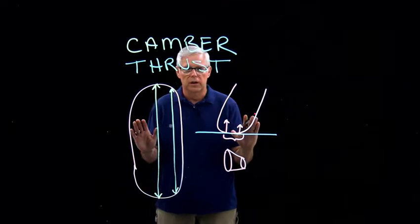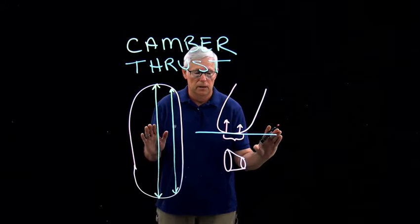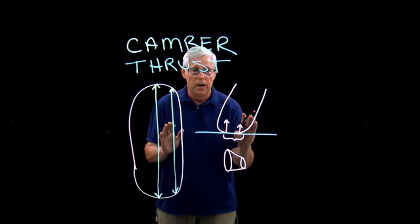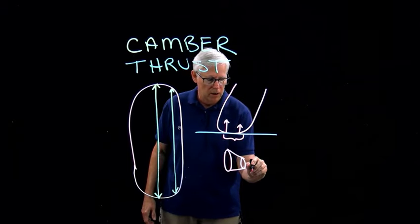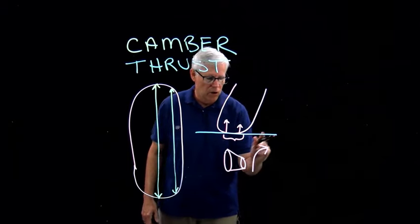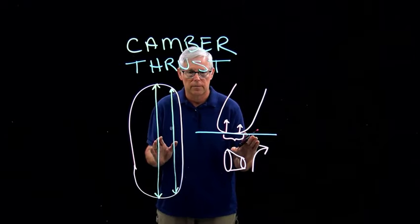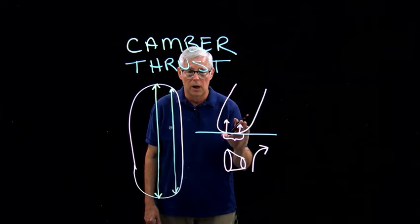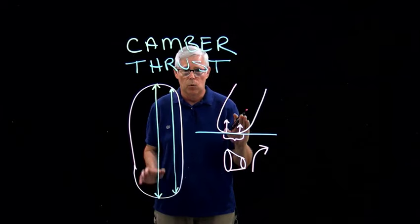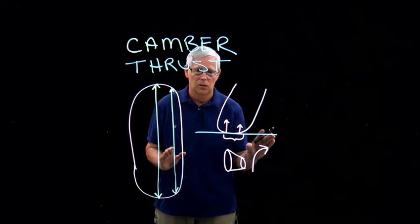Once the motorcycle is in a lean, the curvature of the tires have to turn the motorcycle. When you roll a cone, the cone has to turn. This is called camber thrust, and this is the real reason why a motorcycle turns and why it has to be in a lean to turn it.